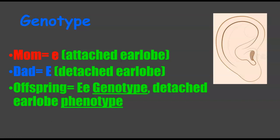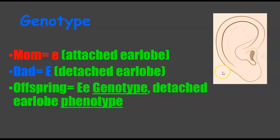Looking more at genotype: if mom has a lowercase e — that recessive allele — and dad has the dominant capital E for detached earlobe, the offspring is going to have a capital E and a lowercase e genotype. This is what the alleles and genes will look like, which will then be portrayed physically as the detached earlobe phenotype.